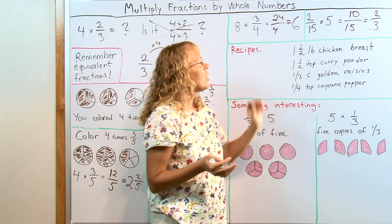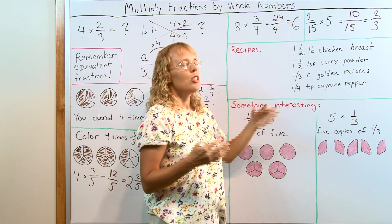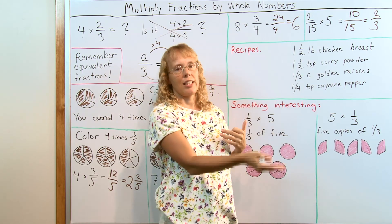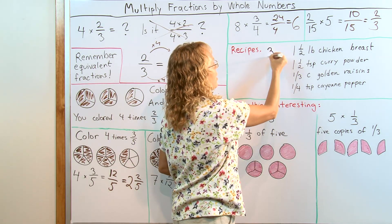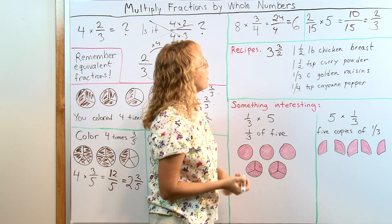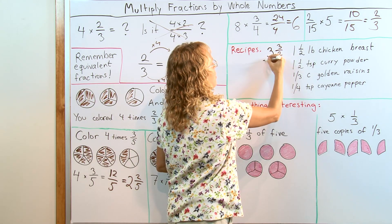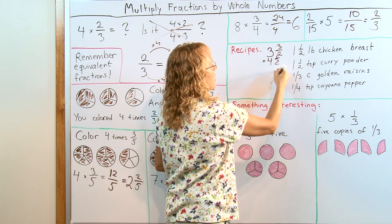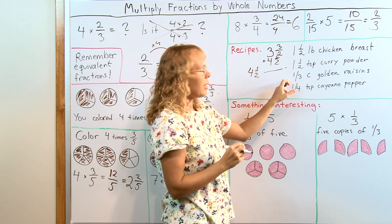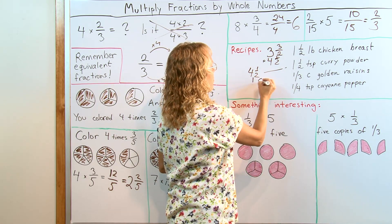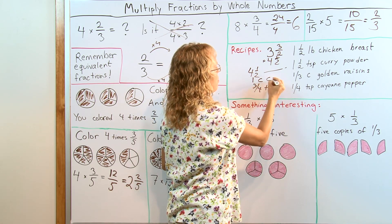When it comes to mixed numbers, it's not that difficult. 3 times 1 and a half: you can think 3 times 1, which is 3, and then 3 times a half, which is 3 halves. So you get 3 and 3 halves, and from there we can get one whole, so it changes to 4 and a half — 4 and a half teaspoons. Then 3 times 1 third gives you 1 cup, and 3 times 1 fourth gives 3 fourths teaspoons.